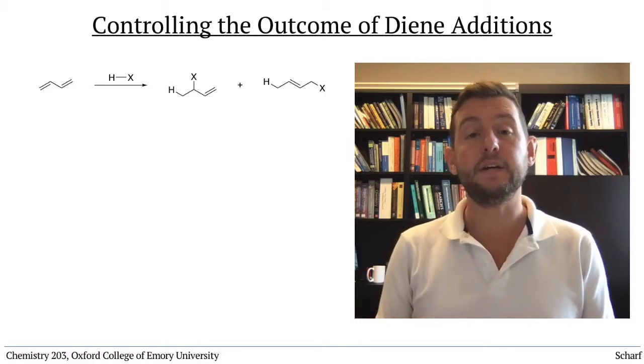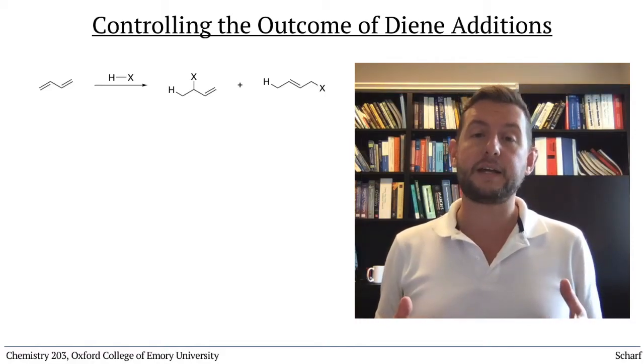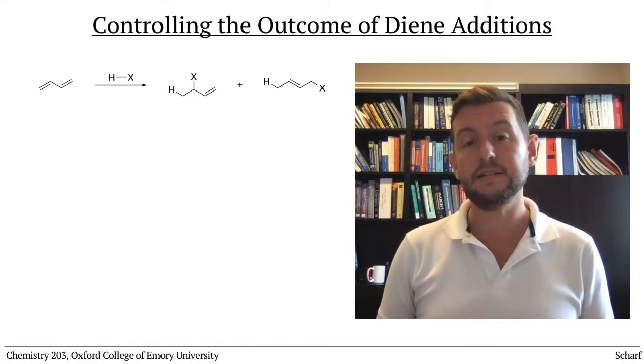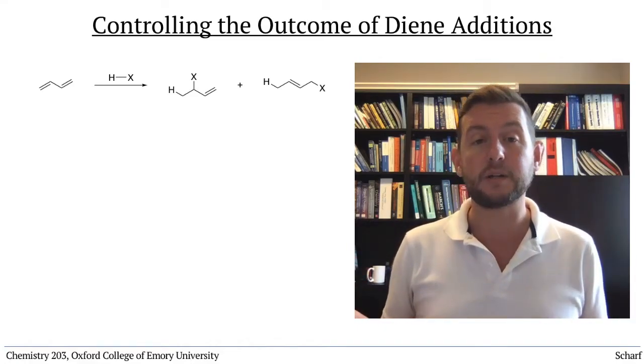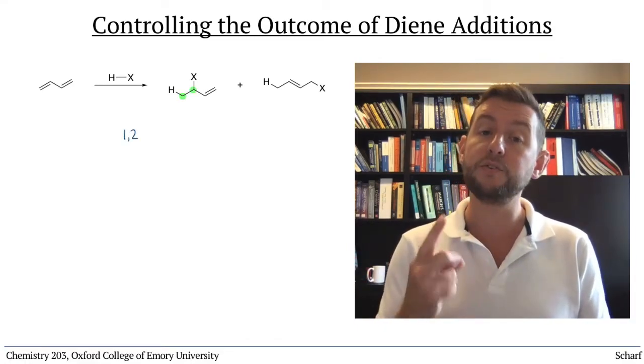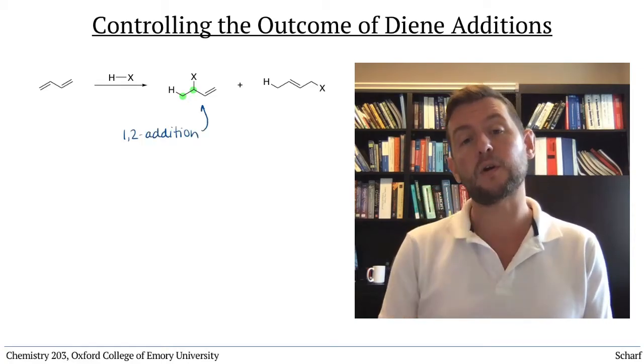In the last video, you saw that addition reactions to conjugated dienes can give mixtures of products, which we called the 1,2 and 1,4 addition products.